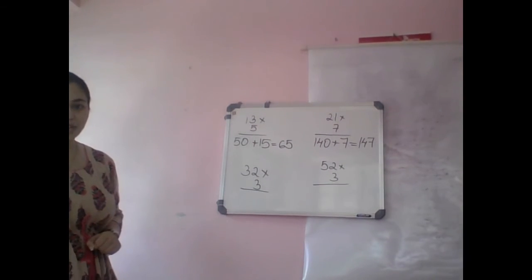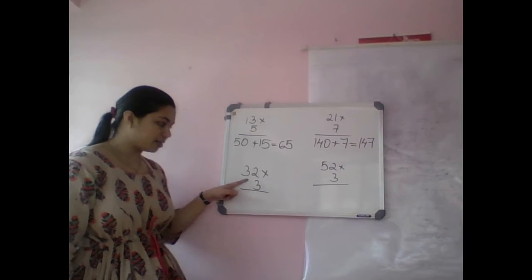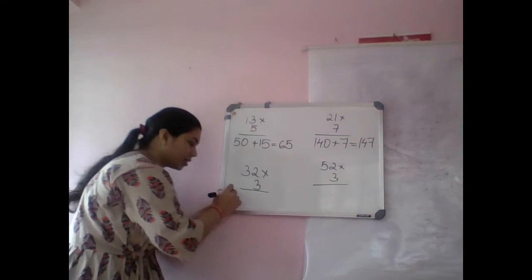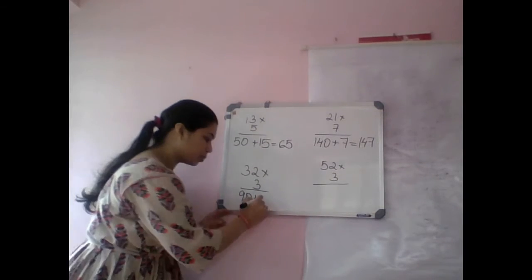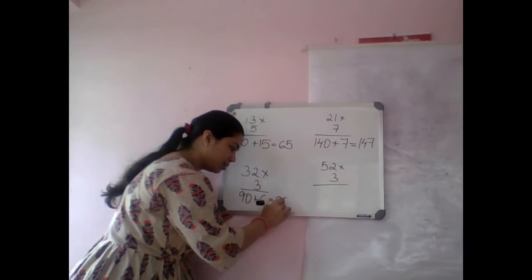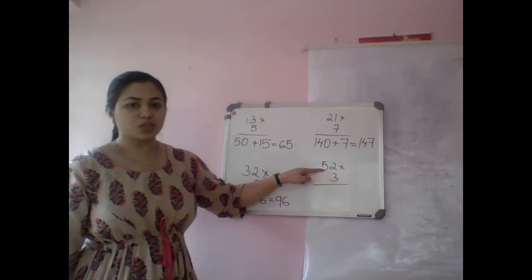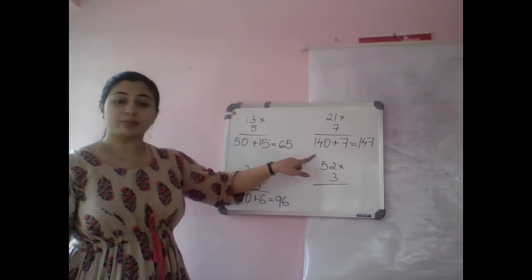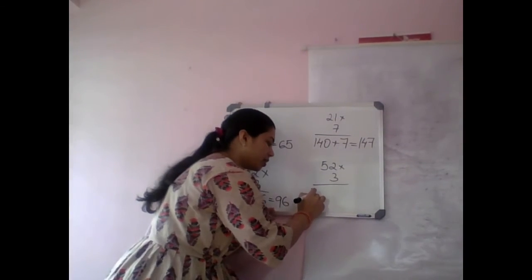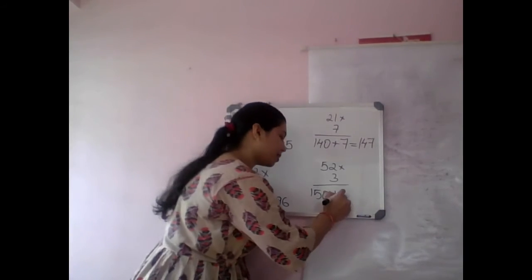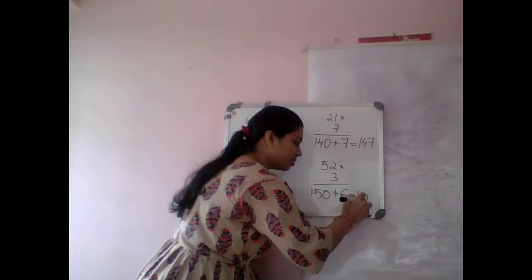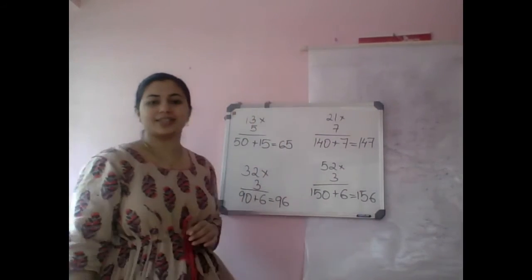32 times 3. Multiply 3 with 30, that is 90, plus 3 times 2, 6. Answer is 96. Again, 52 into 3. 3 times 50, 150 plus 3 times 2 is 6. So the final answer is 156.